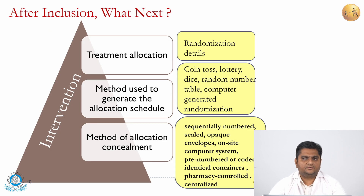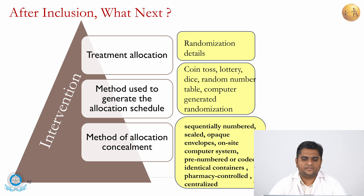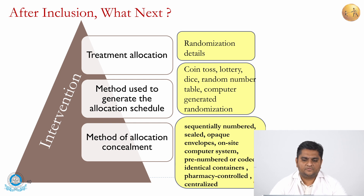Once sample size estimation is done and inclusion criteria are met, the next step is treatment allocation. When there are two groups, any method used to generate the allocation schedule should be described — that is, which group the participant will go into — and there should be a method of allocation concealment so neither participants nor researchers know which group a person is assigned to. Randomization methods include coin toss, lottery method, random number table, or computer-generated randomization. Allocation concealment can be done using sealed envelopes, pre-numbered or pre-coded containers, or centralized allocation.